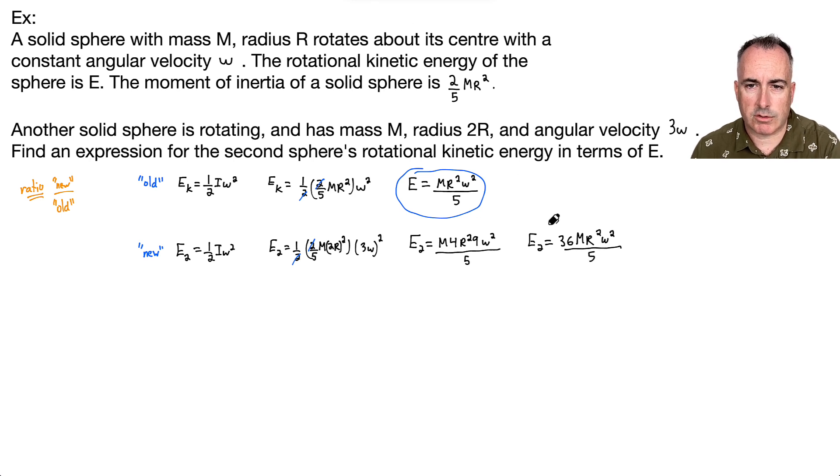Those who are used to doing this will recognize this one looks just like this one, except it's just 36 times. So you could stop right there and say E2 equals 36E.